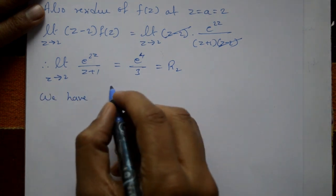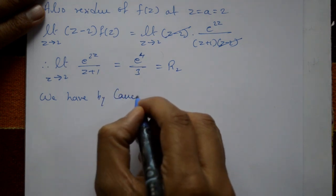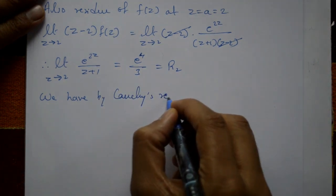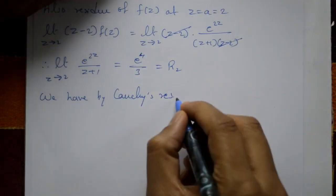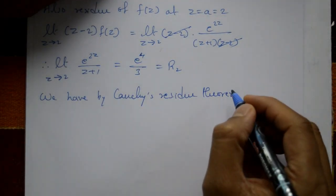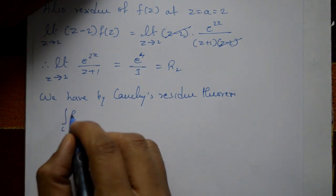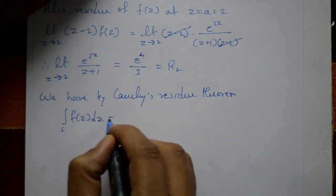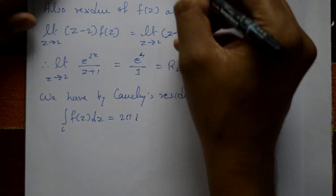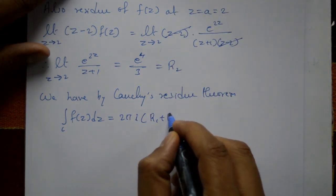By Cauchy's Residue Theorem, the integral of f(z) dz equals 2πi times the sum of all residues, that is 2πi · (R₁ + R₂).